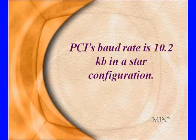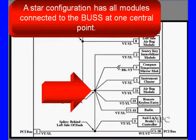It's 1.2 kilobaud in this particular star configuration. The star configuration is where all the modules are connected to the bus at one central point. Now actually we have three central points here, three different splices. This is the bus that security key immobilizer is going to use to notify the PCM that it has the correct security code and the engine can be allowed to start.